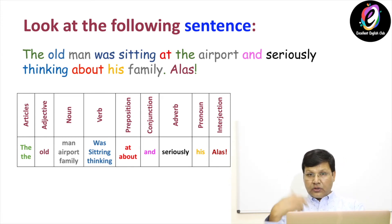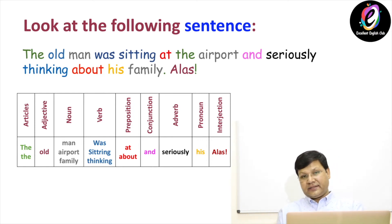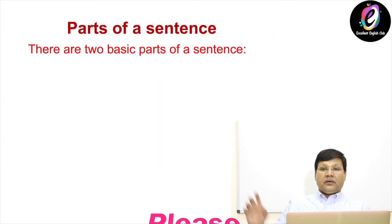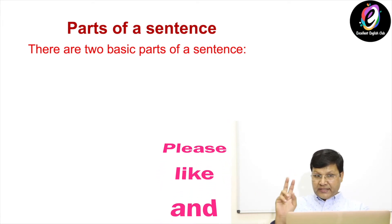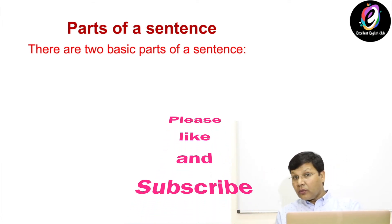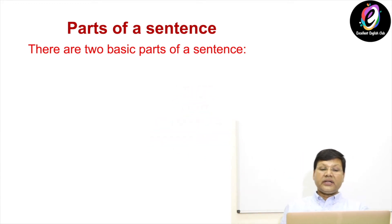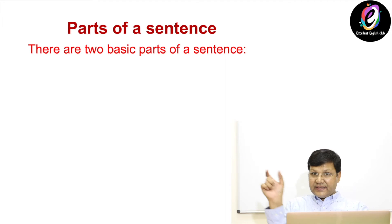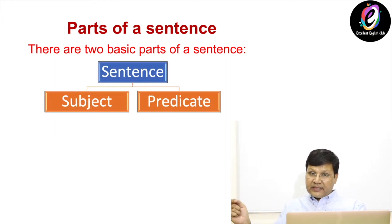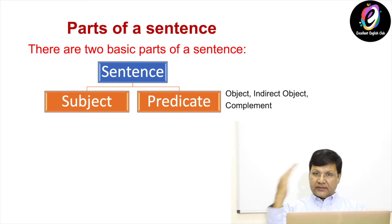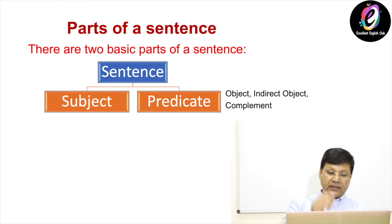The second thing I am going to discuss today is parts of a sentence. How many parts are there in a sentence? There are two basic parts of a sentence. Look here: a sentence has a subject and a predicate — those are the two basic parts. One is subject, the other one is predicate. How will you recognize them? Let me tell you.